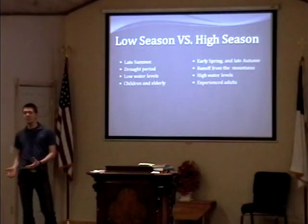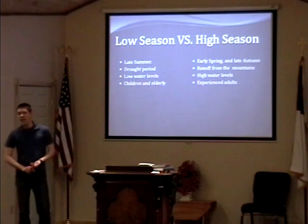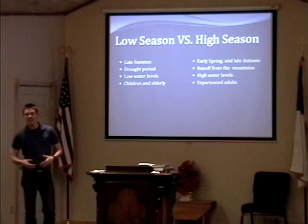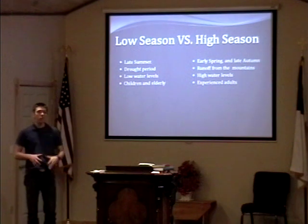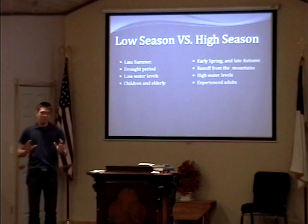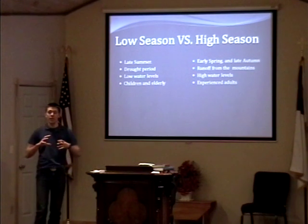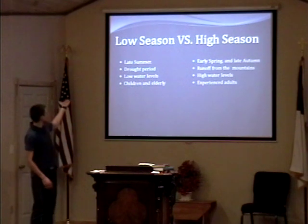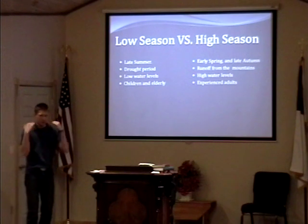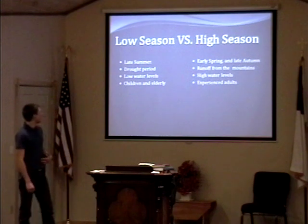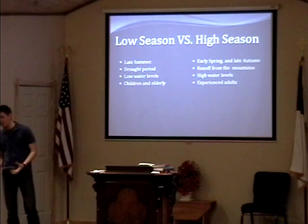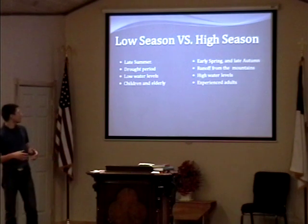The next thing we need to figure out is what a season is. There are two different types: low and high. In the low season, you're looking at around late summer when a drought has generally occurred, and there's going to be a very low level of water. There's a measurement called cubic feet per second, or CFS. For a low season you're looking at about 2,000 to 3,000 CFS, and a high season is generally 4,500 to 5,000 — that's the amount of water flowing past you at that point in time. For the low season, children and the elderly would generally prefer that. For more experienced adults who really want to have a good time, a high season would be better.